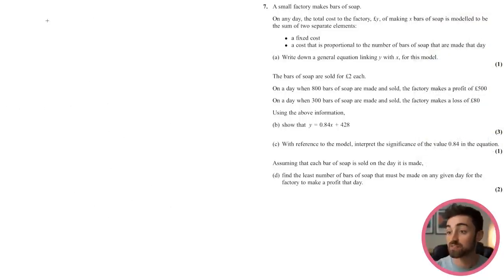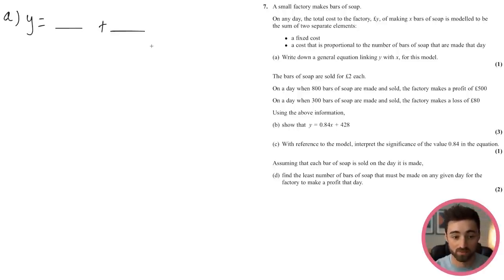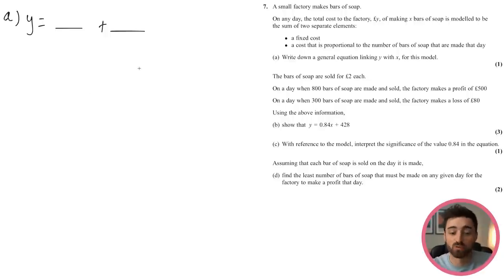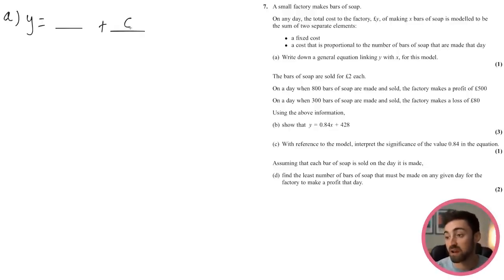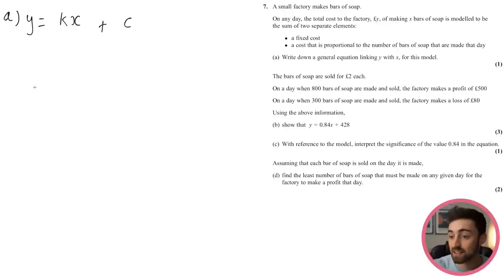Question 7: a factory's total daily cost y of making x bars of soap is the sum of a fixed cost and a cost proportional to the number made. Write the general equation. The fixed cost is a constant c, and the cost proportional to x is kx, where k is the constant of proportionality. So y = kx + c.